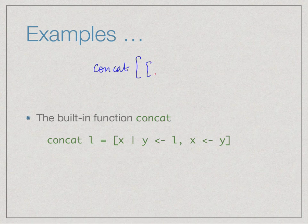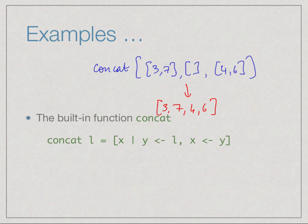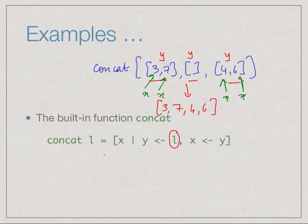Here is another function rewritten using list comprehension: concat. Concat dissolves brackets — for example, concat of [[3,7],[4,6]] produces [3,7,4,6]. It takes a list of lists and produces a single list by collapsing them together. Using list comprehension: for each element y in l, take each x in y and output it. So y iterates over the inner lists, x iterates over elements of each inner list, and everything is extracted as output elements.